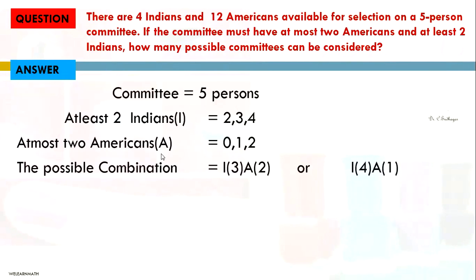The possible combinations are: 3 Indians with 2 Americans, or 4 Indians with 1 American. To take 3 Indians from 4 available, the combination is ₄C₃. To take 2 Americans from 12 available, it is ₁₂C₂.